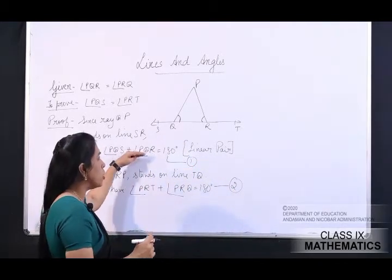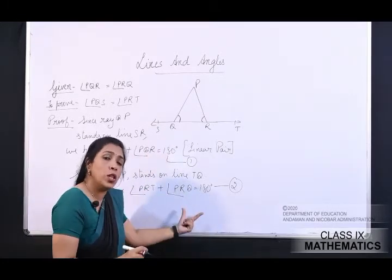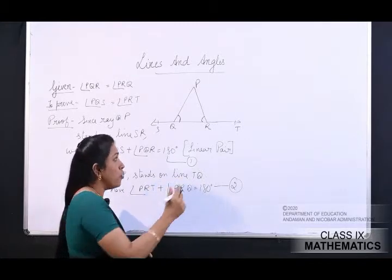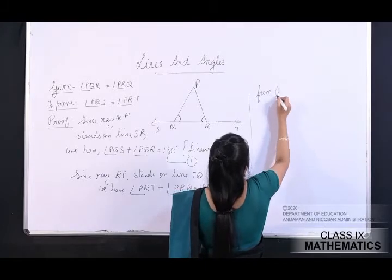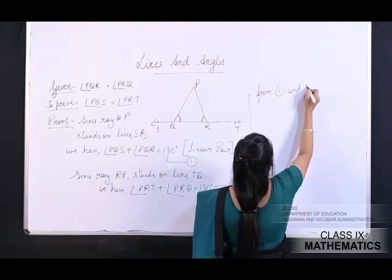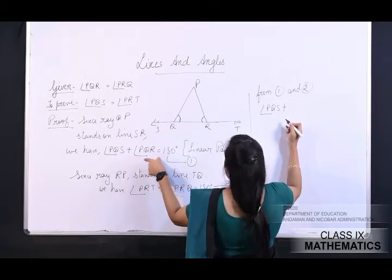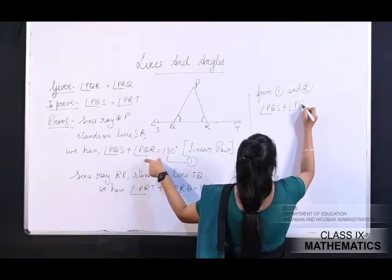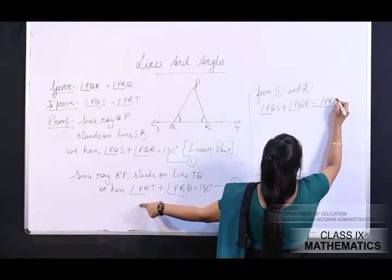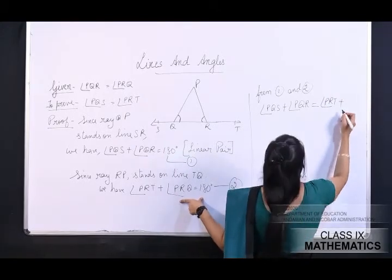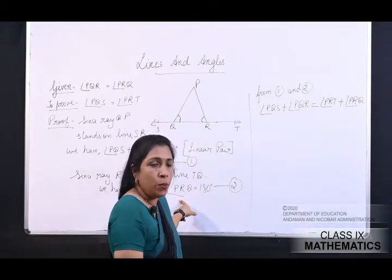From equation one and equation two, both equal 180 degree, so we equate them: angle PQS plus angle PQR equals angle PRT plus angle PRQ.